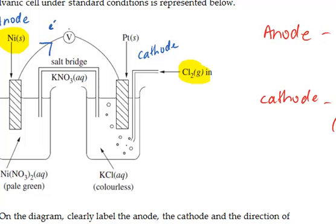And I can just label on the top, electron flow, to be clear. So flows from the anode to the cathode. And that answers our first question.